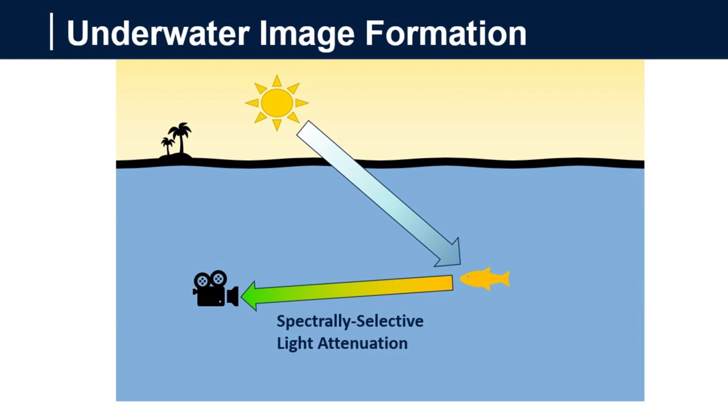The poor image quality is the result of two key phenomena in underwater image formation. The first is spectrally selective light attenuation, where light reflected from increasingly distant targets quickly loses most of its red component and some of its green.